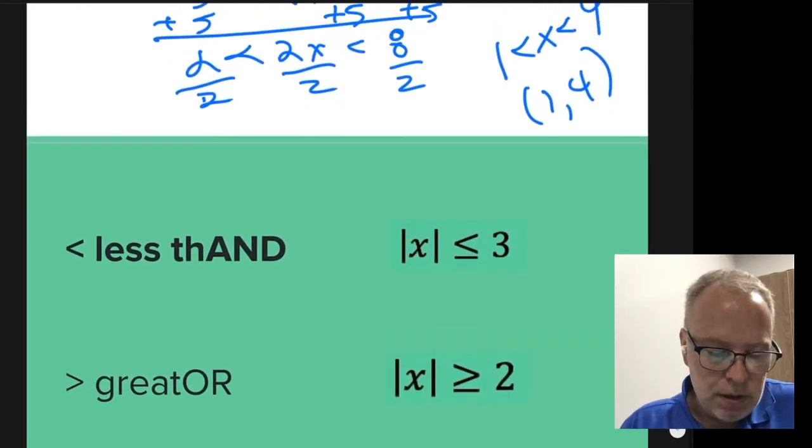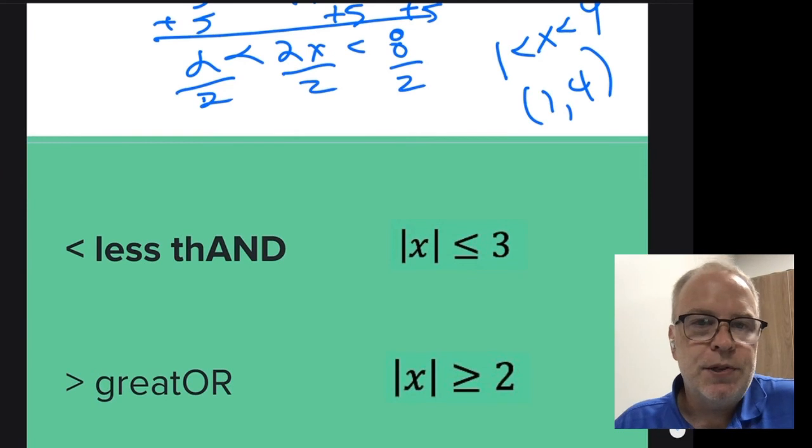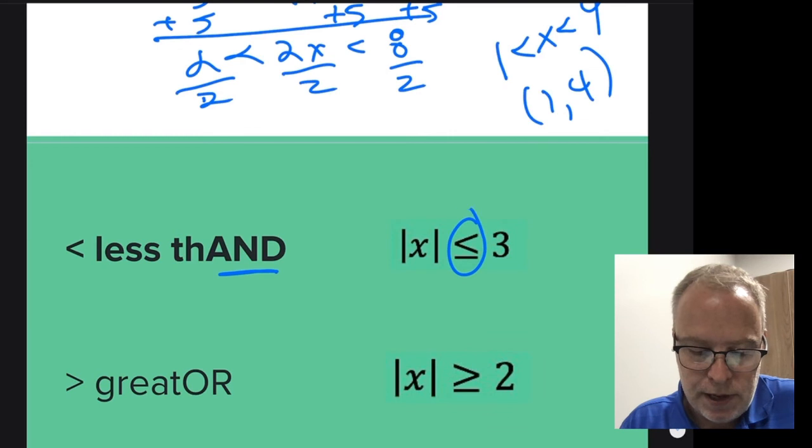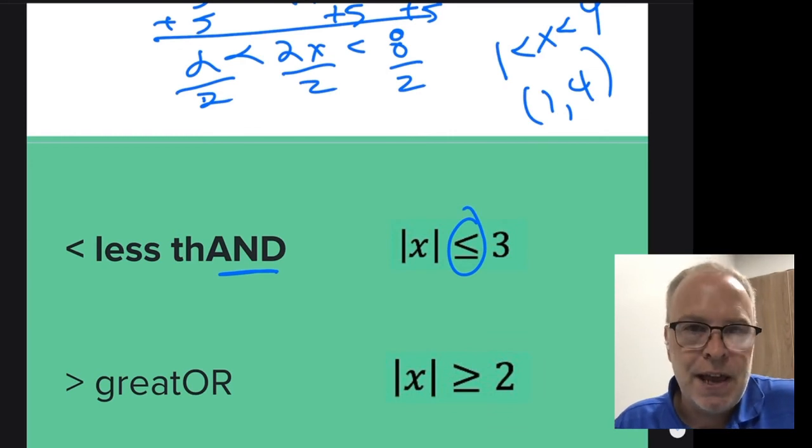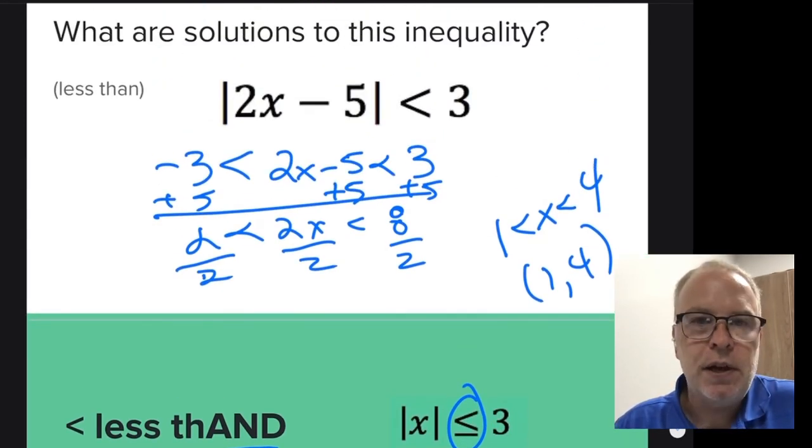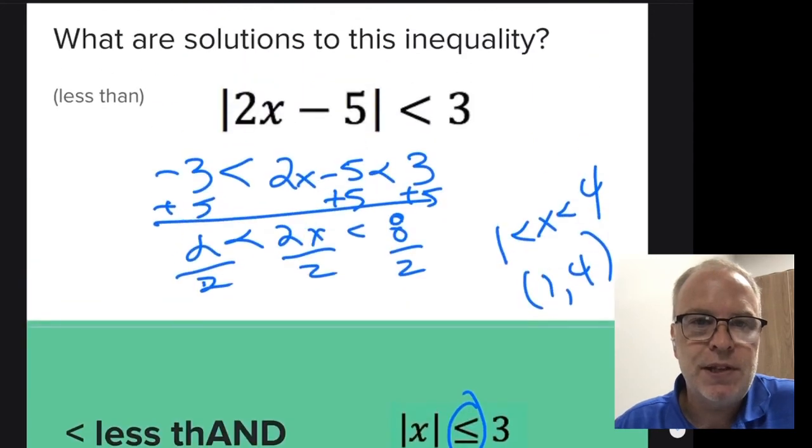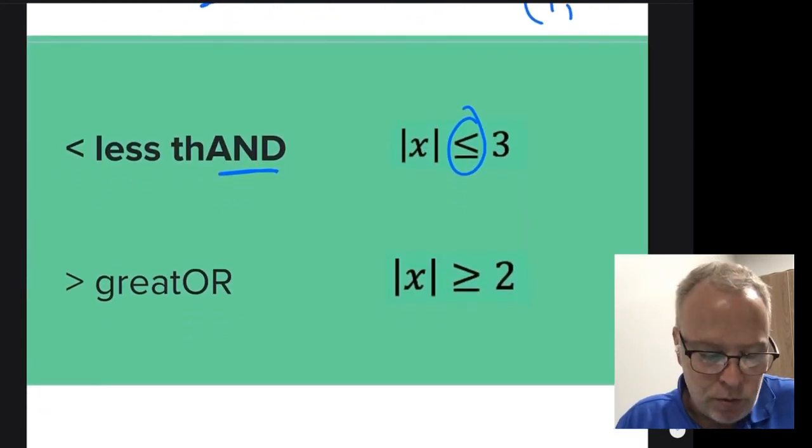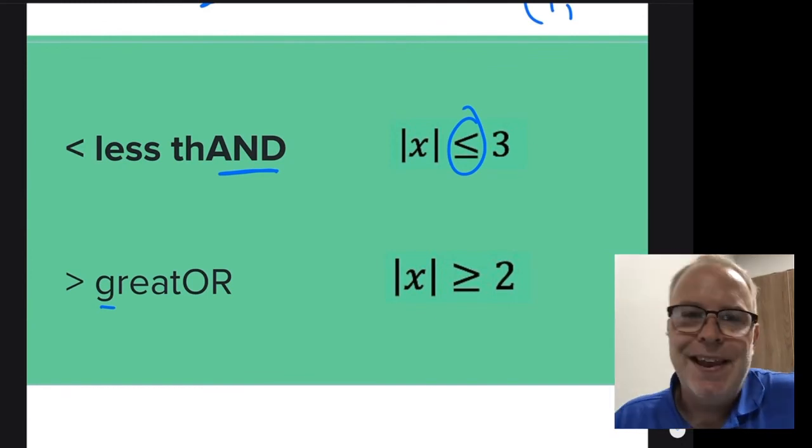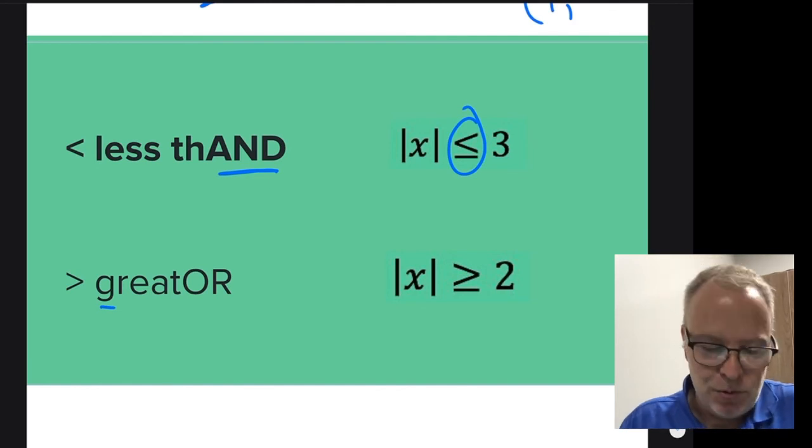Now another way to remember this, this is kind of cutesy, is less than has the word and in it. So when you have a less than symbol, it's an and problem like I just got done doing here. That's an and problem. It was a less than symbol. You see the less than symbol right there. And then if it's great or, or it's an or problem. See how easy that is to remember.